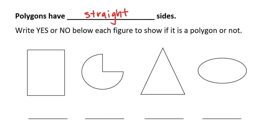The first one is a rectangle, and you can see it has 4 straight sides, so that is a polygon. The next shape has some straight sides, but it also has a curve, so that is not a polygon. The triangle has three straight sides, so yes, it is a polygon. And the last shape is an oval, and that is not a polygon because it doesn't have straight sides.